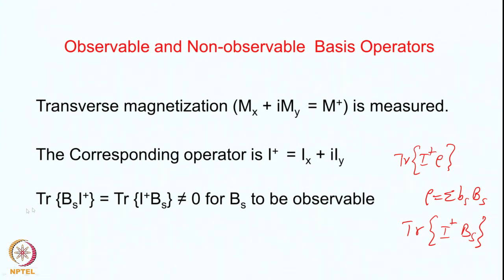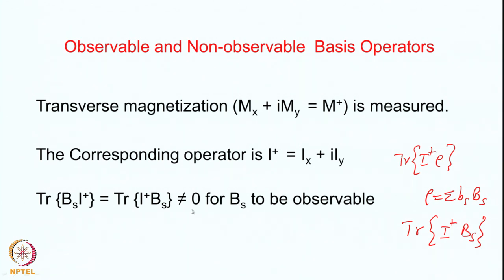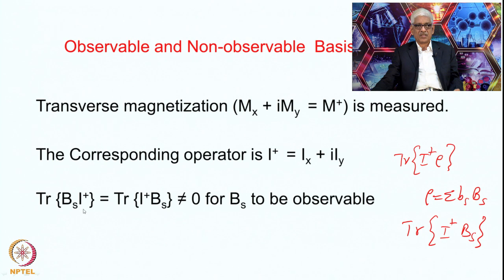Since ρ is a summation of various basis operators, we will have to calculate trace(Bs · I+) for the individual basis operators to see which contribute to the observable signal and which do not. Notice that trace(Bs · I+) equals trace(I+ · Bs) — the order does not matter. This should be non-zero for Bs to be observable. This is the condition: the expectation value must be non-zero for it to be observable.